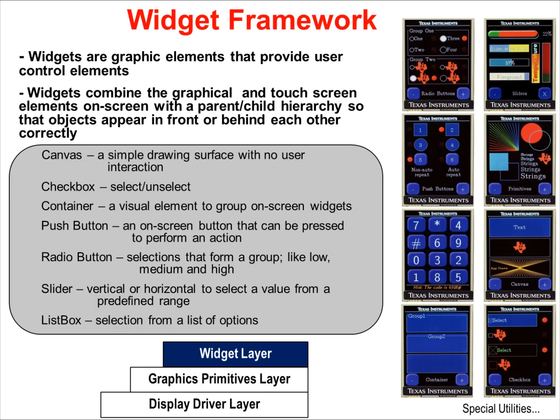Widgets are the top layer of the graphics library. Widgets are graphic elements that provide user control elements. They combine the graphical and touch screen elements on screen in a parent-child hierarchy so that objects appear in front of or behind each other as they are supposed to, and this hierarchy can extend multiple layers. It also determines which elements on the screen will be updated when you request an update. Canvases provide a simple drawing surface. Check boxes allow you to select and unselect actions. Containers group your widgets and controls together. Push buttons provide an on-screen button that can be pressed. Radio buttons allow you to select from a group. Sliders, either vertical or horizontal, allow you to graphically select a value from a predefined range. List boxes provide you with a list of selections that you can pick from.